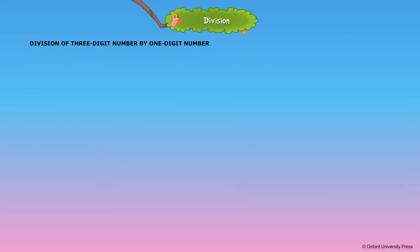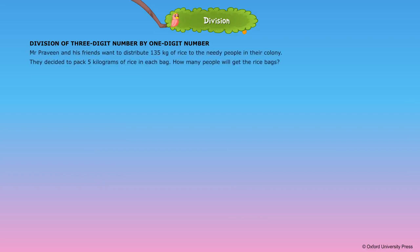Division of a three-digit number by a one-digit number. Mr. Praveen and his friends want to distribute 135 kilograms of rice to the needy people in their colony. They decided to pack 5 kilograms of rice in each bag. How many people will get the rice bags? By dividing 135 by 5, we can find out how many people get the rice bags.